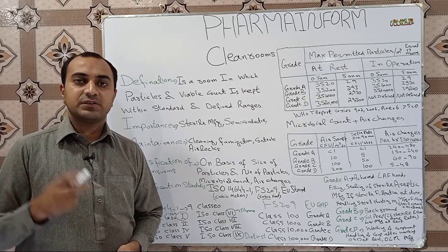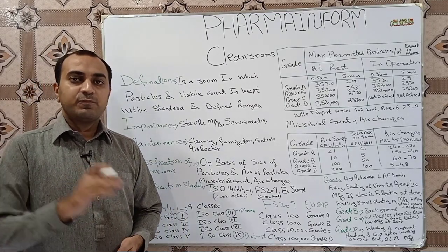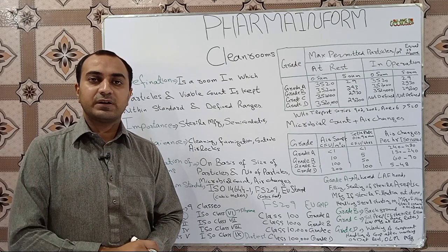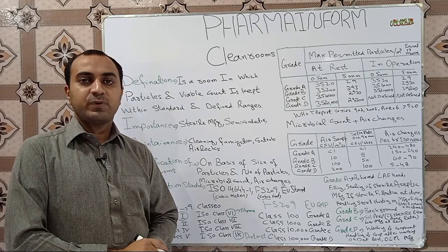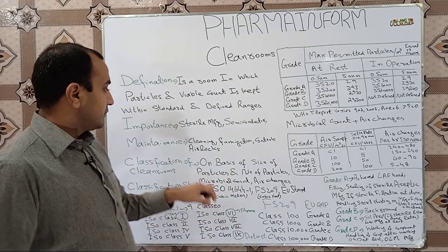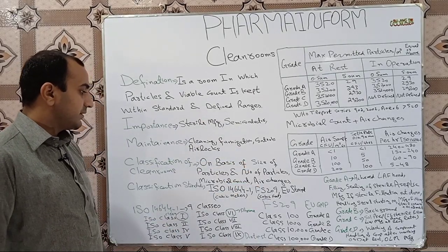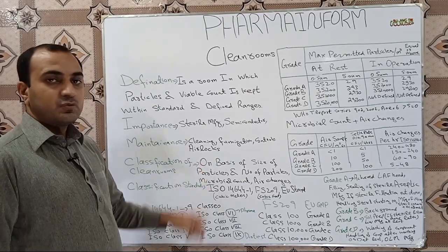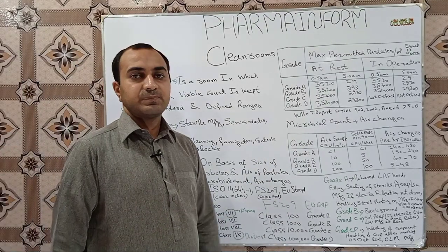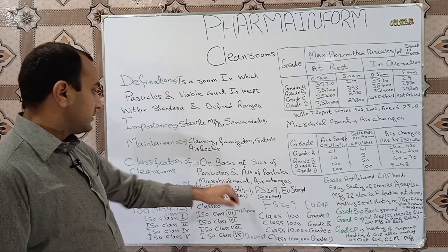On which basis do we classify clean rooms? Clean rooms are basically classified on the basis of size of particles and number of particles. For classification we take two size ranges of particles: one is 0.5 micron and the other is 5 micron. Clean rooms are also classified on the basis of microbial count and air changes per hour.